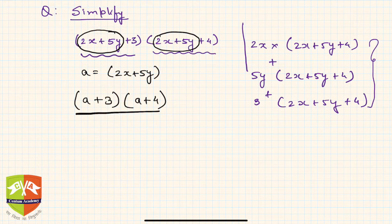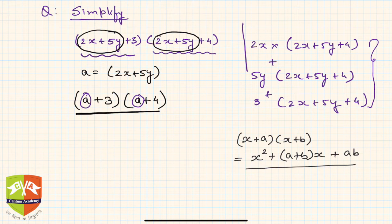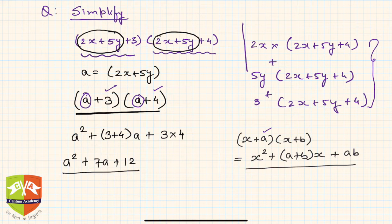This looks familiar because we have learned an algebraic identity: (x+a)(x+b) = x² + (a+b)x + ab. Here, instead of x we have a, instead of a we have 3, and b is 4. So using the same identity, this is nothing but a² + (3+4)a + 3×4, which gives us a² + 7a + 12.